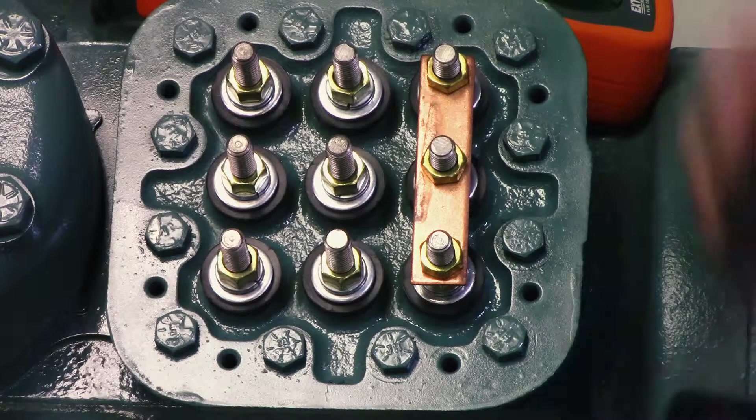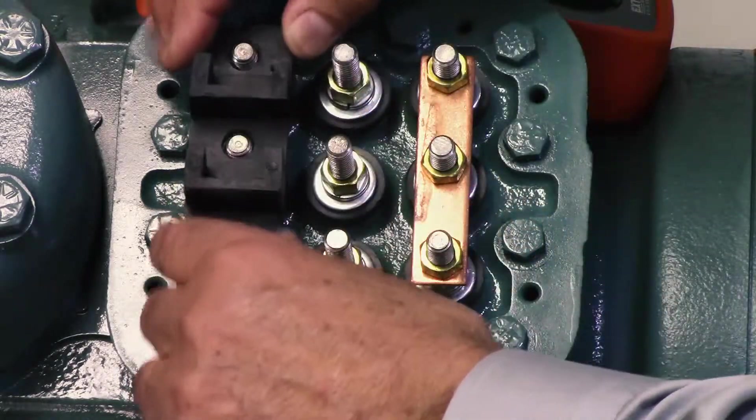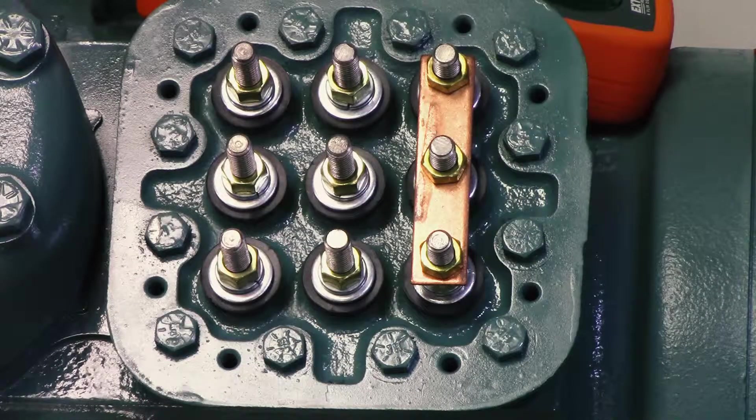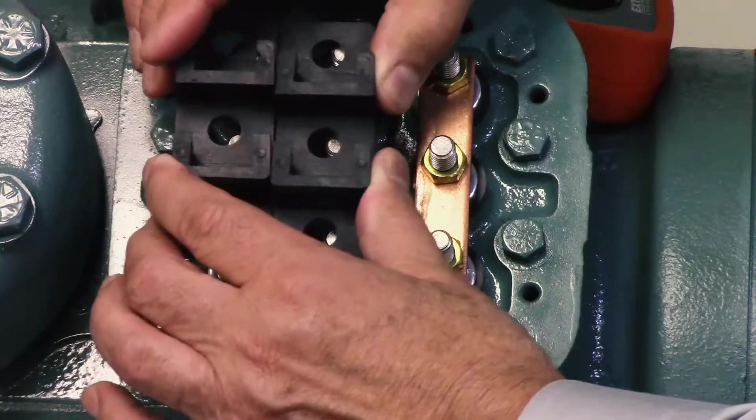You start with the jumpers, with the Bakelite boards. When you put them on, understand that they can go on two ways: this way or the reverse. This is the wrong way.